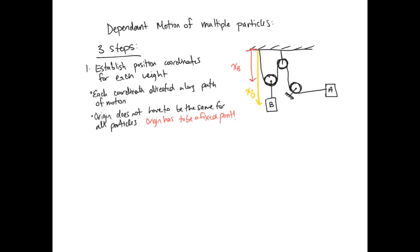Now for A, the position coordinate for A also has to be along the path of motion of A, and from a fixed point. So I'm actually going to choose this pulley here, and draw the position of A. It's going to be XA from that point. So as A moves, if A moves to the right, it's along this position vector here.